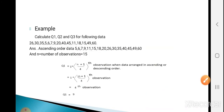Now see an example. Calculate Q1, Q2, Q3 for the following data. The data is given only as values of X, meaning it is ungrouped data. The values are 26, 30, 35, 5, 6, 7, 9, 20, 40, 45, 11, 18, 15, 49, and 60. To find the quartile values, we first need to arrange the data in ascending order.